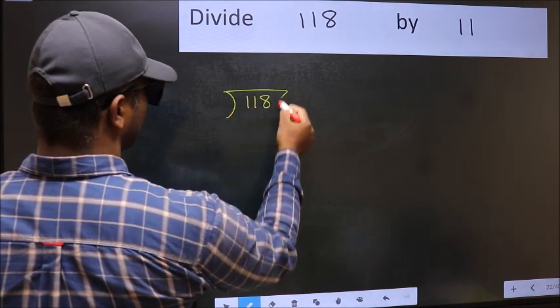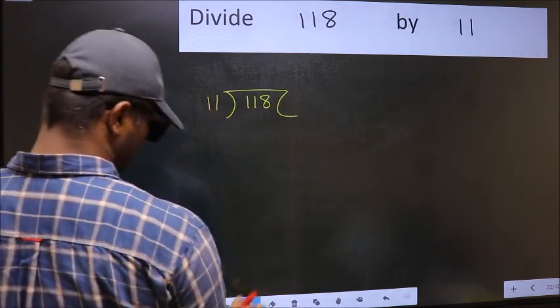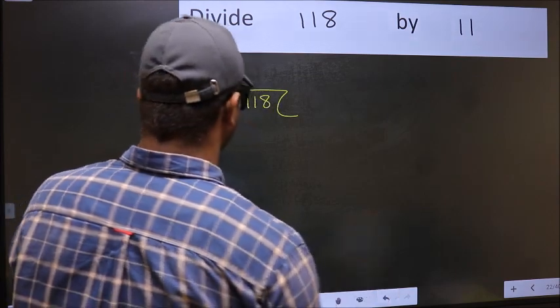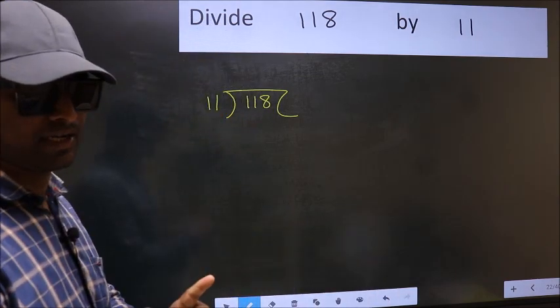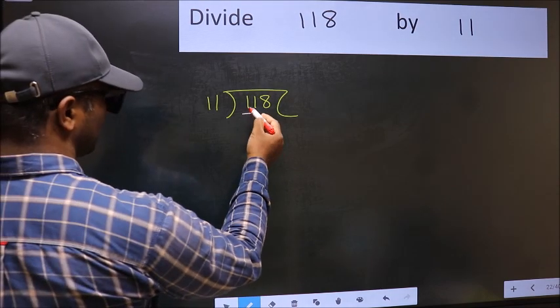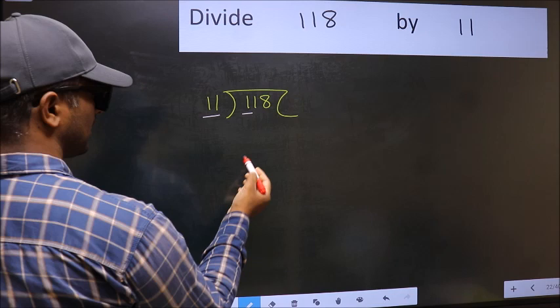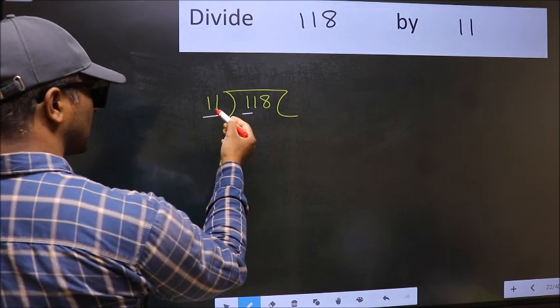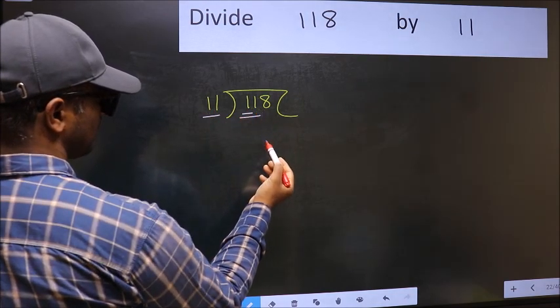118 and 11 here. This is your step 1. Next, here we have 1 and here 11. 1 is smaller than 11, so we should take two numbers: 11.